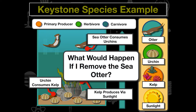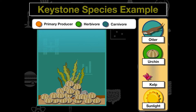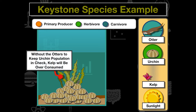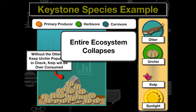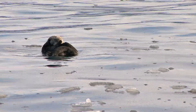What would happen if we remove the sea otters from the ecosystem — if they go extinct? Without the sea otters, the urchin population would explode because nothing keeps it in check. As a result, the urchins consume the kelp at an unsustainable rate. Without the otters, the kelp is over-consumed, and eventually the urchins lose their food source, causing the entire ecosystem to collapse. All abiotic and biotic factors are interconnected, and removal of a keystone species causes ecosystem collapse.